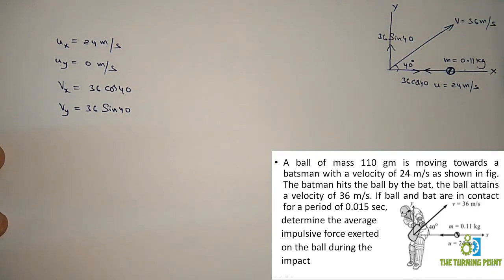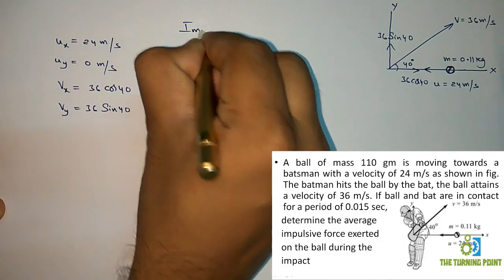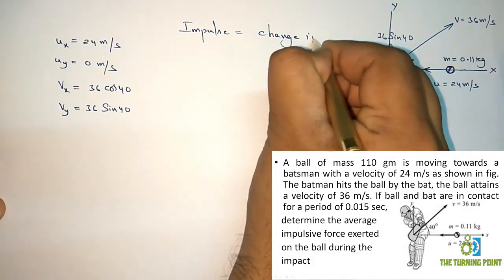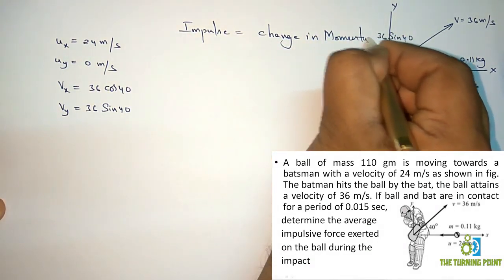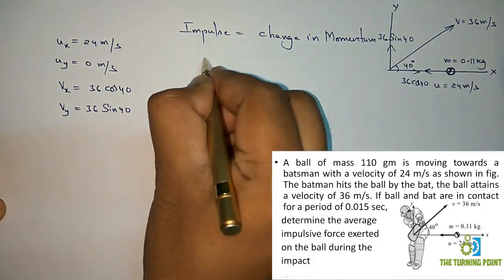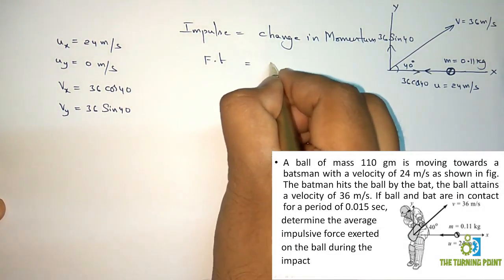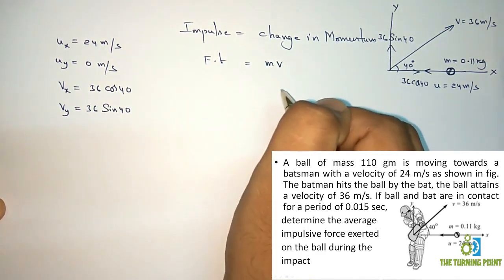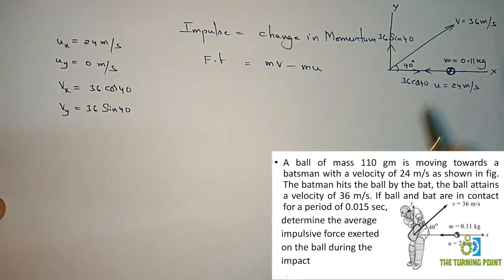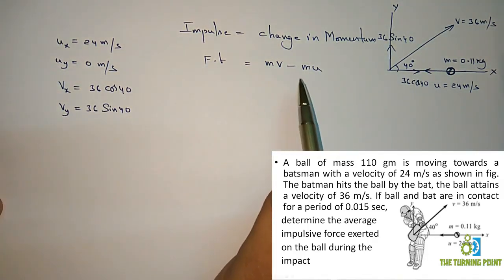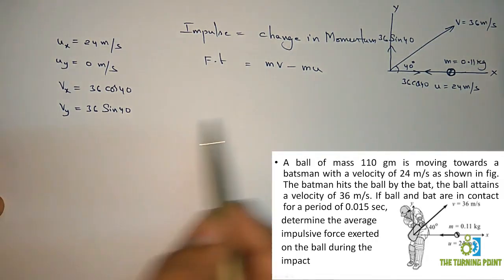We need to apply the impulse-momentum principle, which states that impulse is equal to change in momentum. Impulse is the product of force and time. Change in momentum is the difference of final momentum and initial momentum — momentum being the product of mass and velocity. Note: moment is different; it is the measure of rotational effect on an object, equal to the product of force and perpendicular distance. Here we have components along x and y directions.